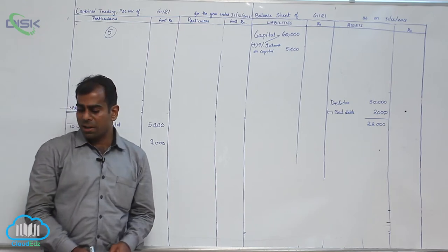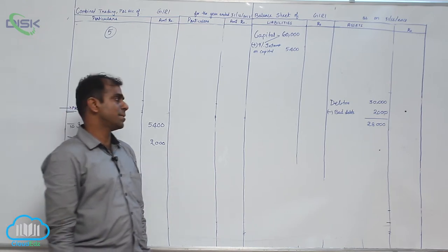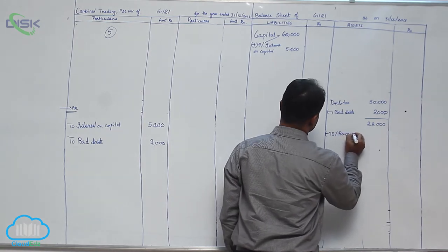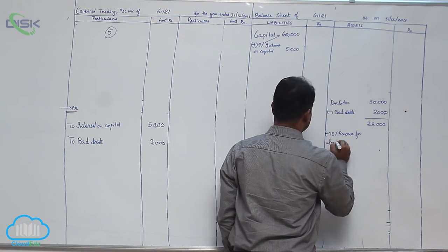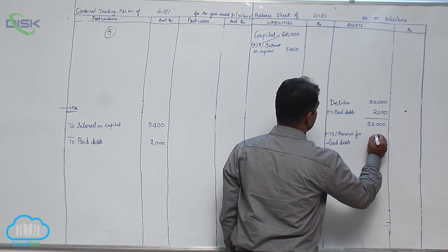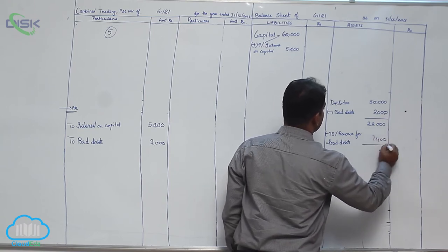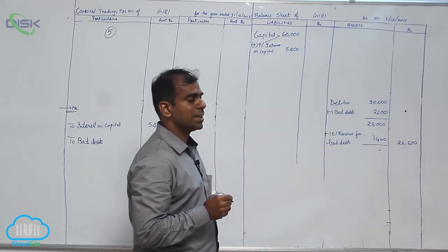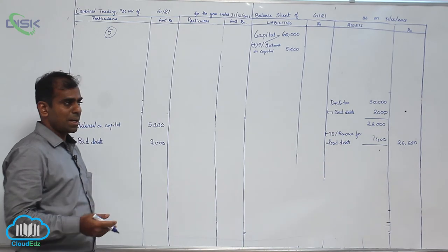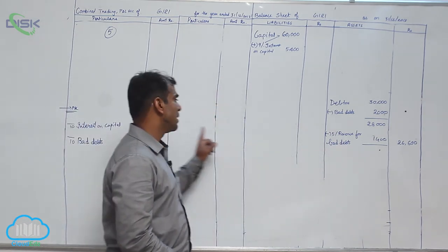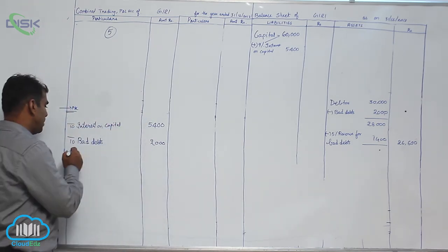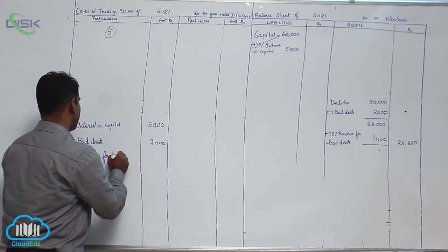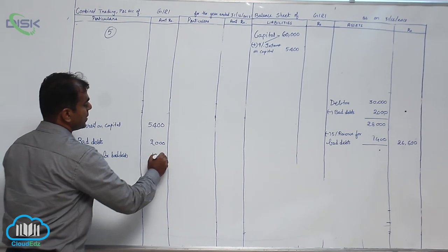Next, we provide five percent reserve for doubtful debts. Five percent of twenty-eight thousand gives one thousand four hundred, so debtors become twenty-six thousand six hundred ultimately. Referring to the table, provision for doubtful debts given in the adjustment should be taken in the P&L account debit side. So we write reserve for bad debts — or doubtful debts, same thing — in the P&L debit side, the amount being one thousand four hundred.